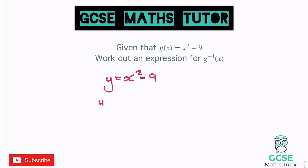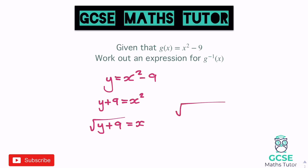Add 9 to both sides, we get y plus 9 equals x squared. And then to get x as the subject, we're going to have to remove the square, so we square root both sides, and we get the square root of y plus 9 equaling x. Then to finish it off, just swap the x and y again, so you get the square root of x plus 9, and that is equal to the inverse function of g. The square root of x plus 9. One more question before you have a go.